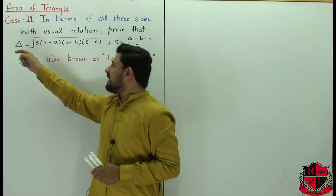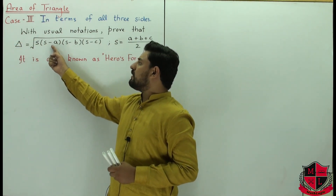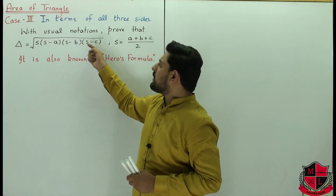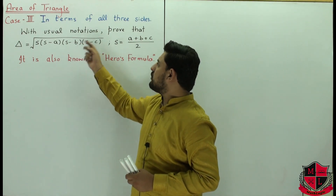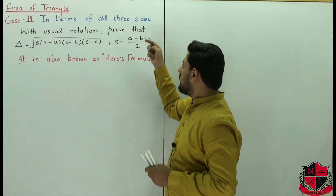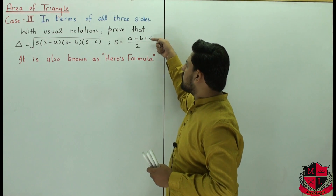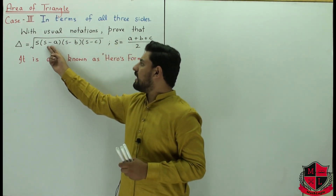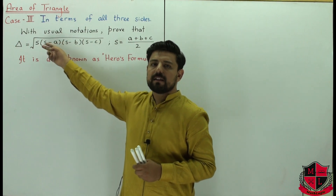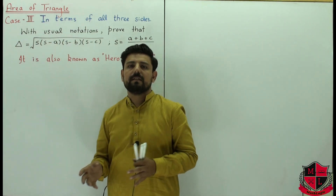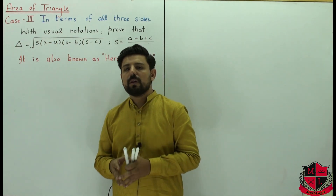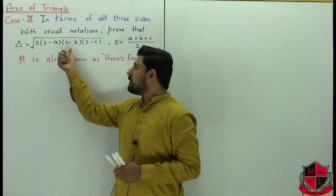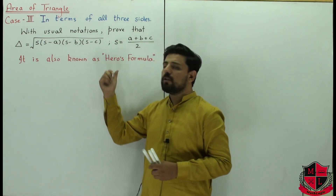The formula is delta equals the square root of s times (s minus a) times (s minus b) times (s minus c), where s is the semi-perimeter — the sum of all three sides a, b, and c divided by two. This is the product under a square root giving us the area of the triangle.